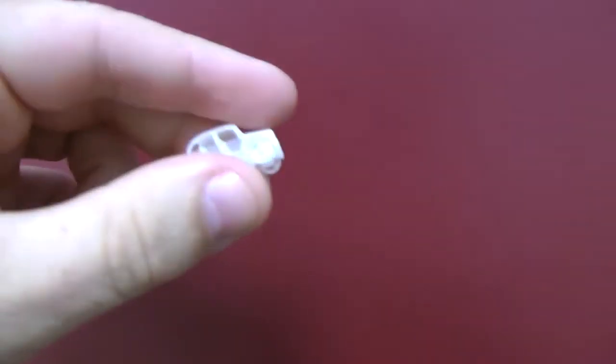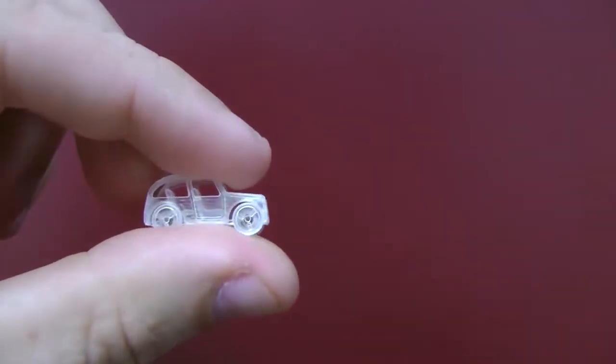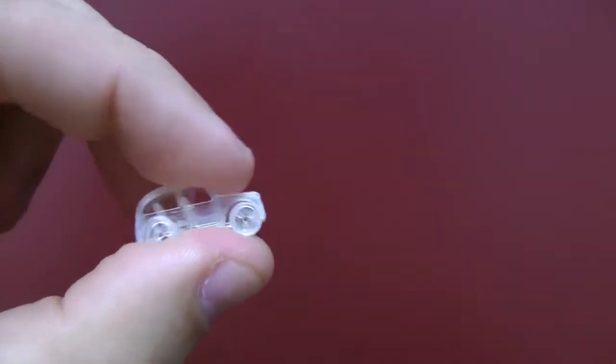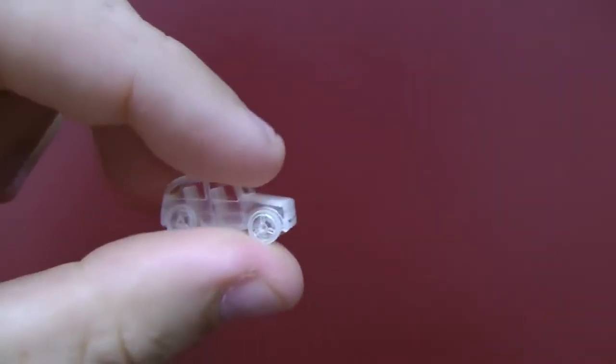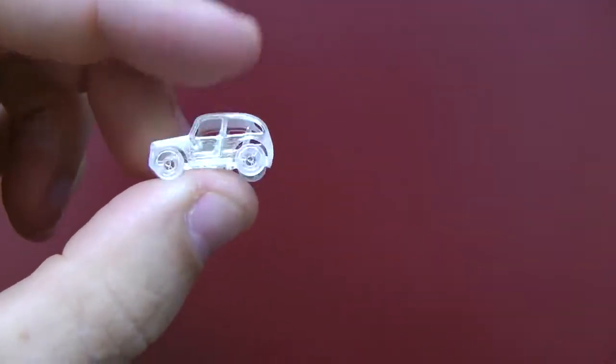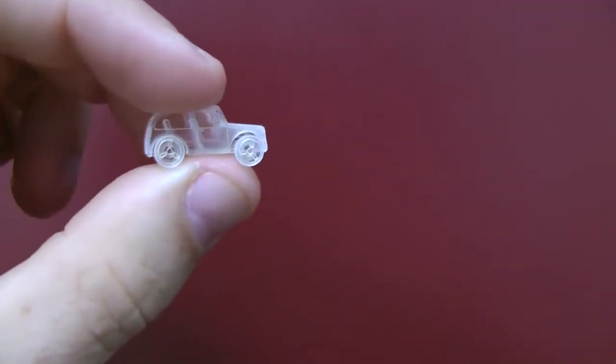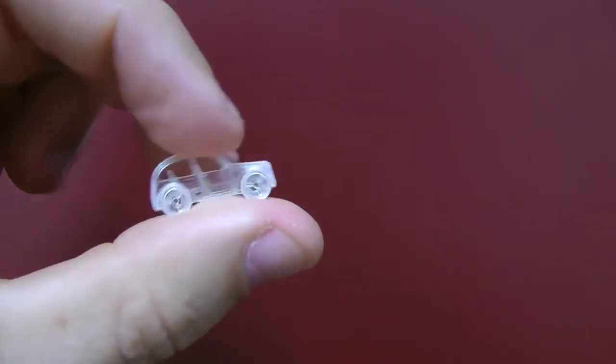Then we go to the next size car, which is exactly half of that size. This one is 2 centimeters in length, and as you can see, the wheels still turn very nicely and all the fine details remain in this size model. As you can see, it's about the size of my thumbtip now.